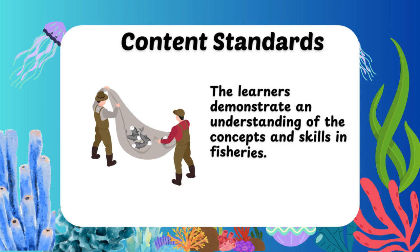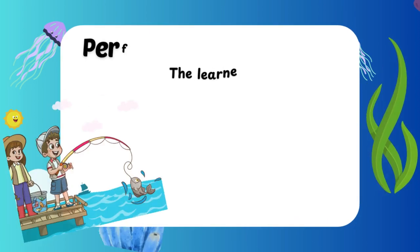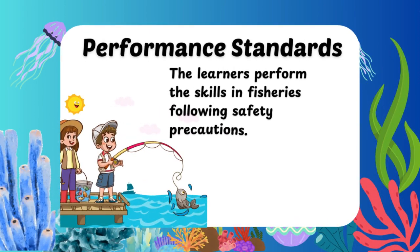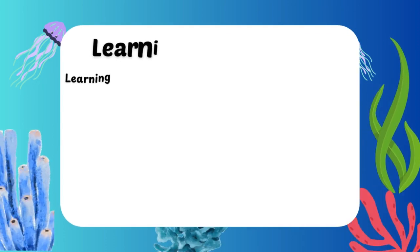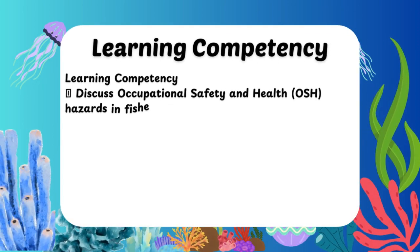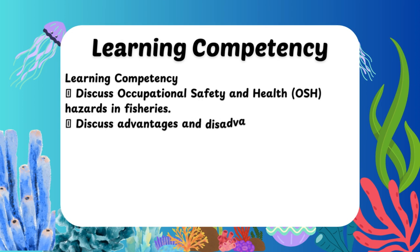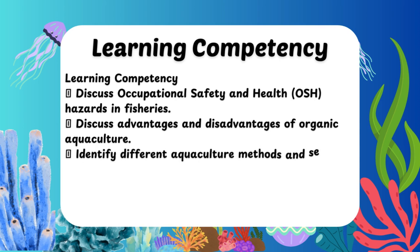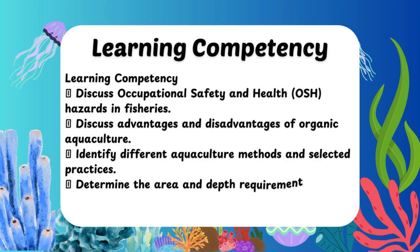The learners demonstrate an understanding of the concepts and skills in fisheries. Performance Standards: the learners perform the skills in fisheries following safety precautions. Learning Competency: Discuss Occupational Safety and Health (OSH) Hazards in Fisheries; Discuss Advantages and Disadvantages of Organic Aquaculture; Identify different aquaculture methods and selected practices; Determine the area and depth requirement of aquaculture facilities.